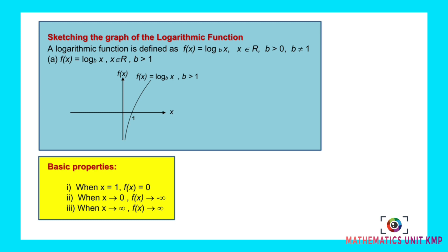For the logarithm function, as you know, logarithm is the inverse of indices or exponential. Before this, you have learned that in indices you deal with horizontal asymptote. So terbalik (reversed), it becomes vertical asymptote. For logarithm function, you will need to find the vertical asymptote. Okay, for sketching the graph, the first step is you find the value when y equals 0.